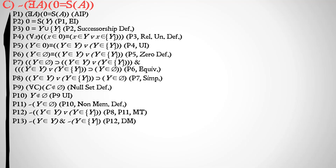We use DeMorgan's law to distribute the negation across the disjunction, converting it to a conjunction: it's not the case that Y is a member of Y, and it's not the case that Y is a member of the set of Y. Using simplification, we isolate: it's not the case that Y is a member of the set of Y. At this point it should be clear how we'll get a contradiction, since Y is clearly a member of the set whose only member is Y.